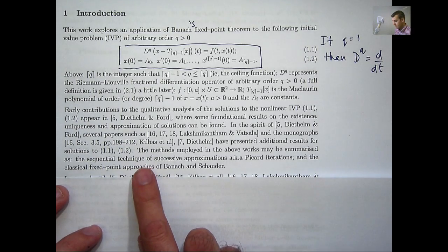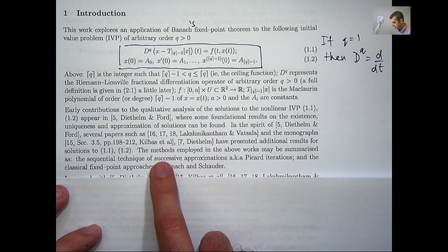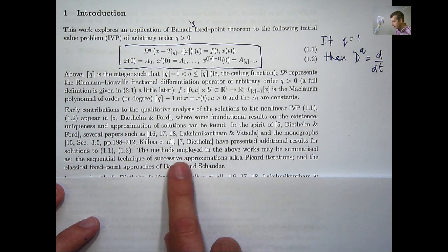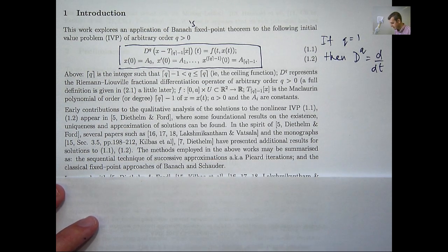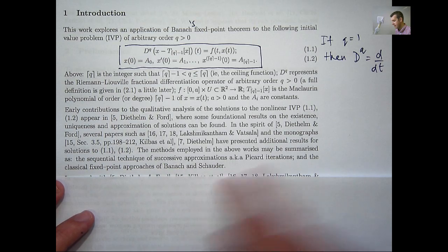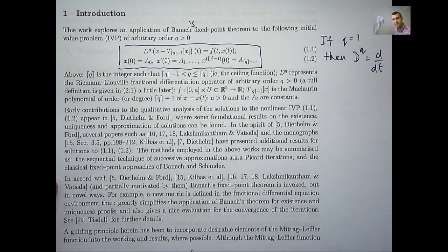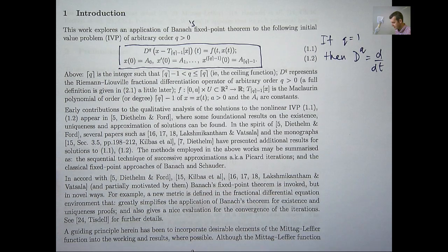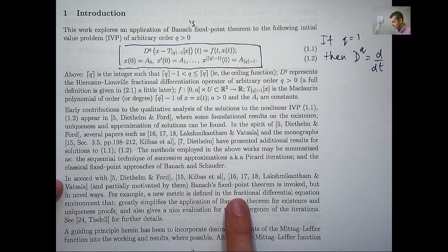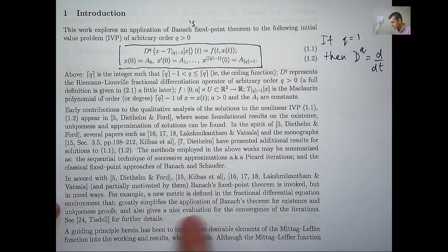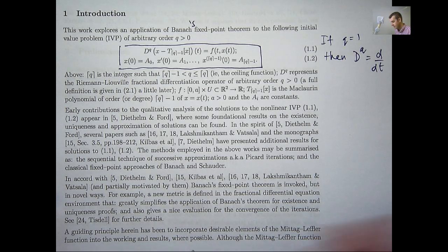To give a brief summary of the methods involved in these types of papers, there are two techniques: mainly the sequential technique of successive approximations, also called the Picard iterations, and classical fixed point approaches of Banach and Schauder. How does this particular presentation differ? I'm going to use Banach's fixed point theorem, but apply it in new ways. A new metric is defined that greatly simplifies the application and gives a nice evaluation for convergence of the iterations. These ideas come from a forthcoming paper of mine.